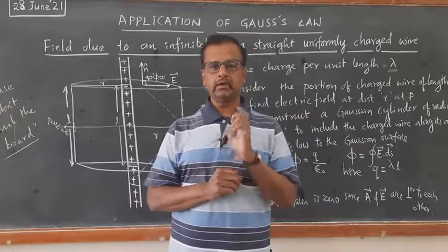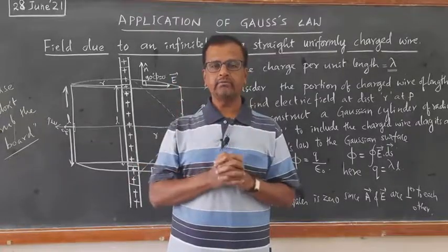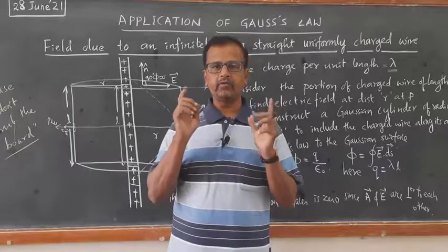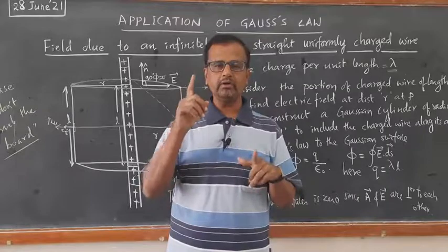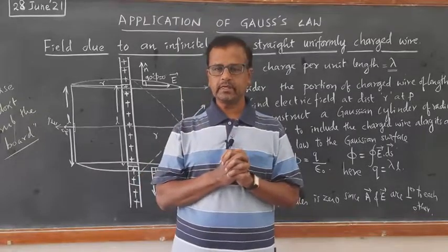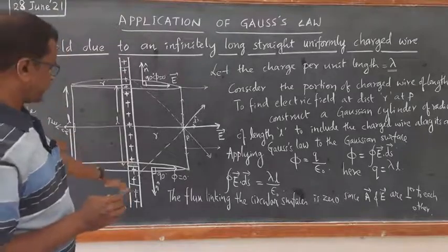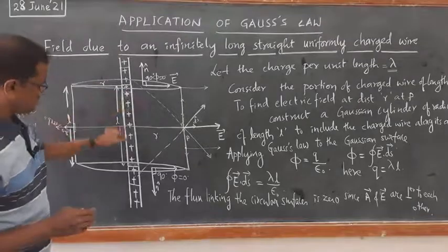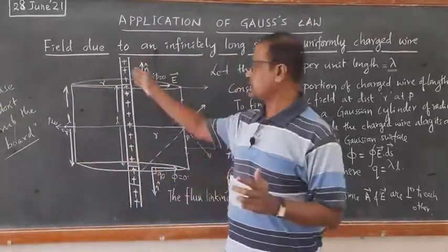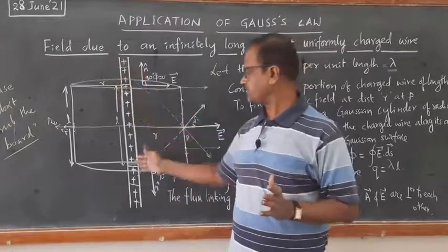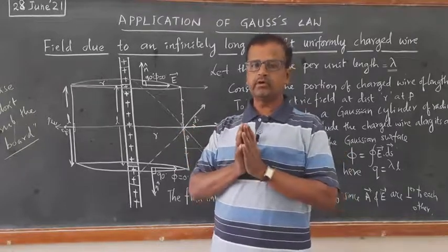First, let us see how to find the electric field due to a uniformly charged infinite wire — an infinitely long wire which is uniformly charged. I have taken part of it: an infinitely long uniformly charged wire whose charge density is lambda. Charge density, as I have told you earlier, is the charge per unit length. It is called linear charge density.